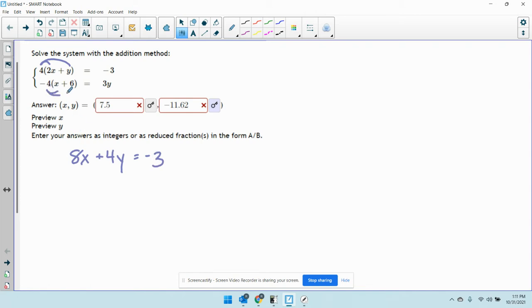And the second one, I'll distribute that. That's going to be negative 4x minus 24 equals 3y.